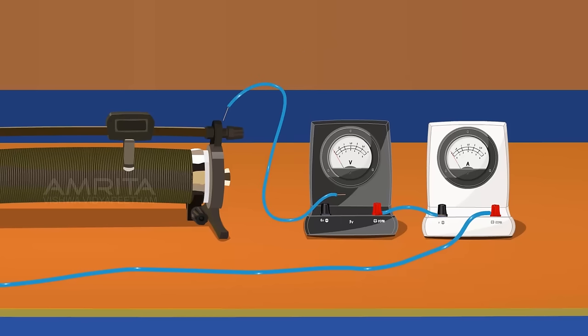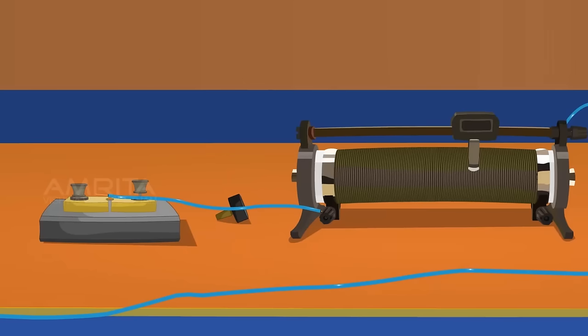The negative terminal of the voltmeter is connected to the upper terminal of the rheostat using a piece of wire. Connect the lower terminal of the rheostat to one end of the one way key using a connecting wire.